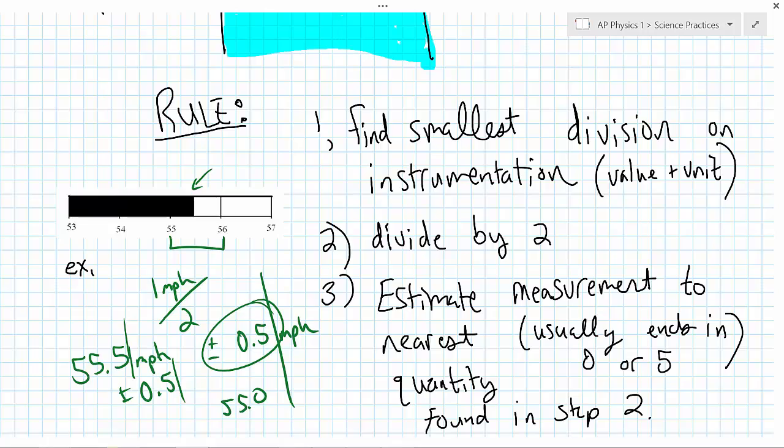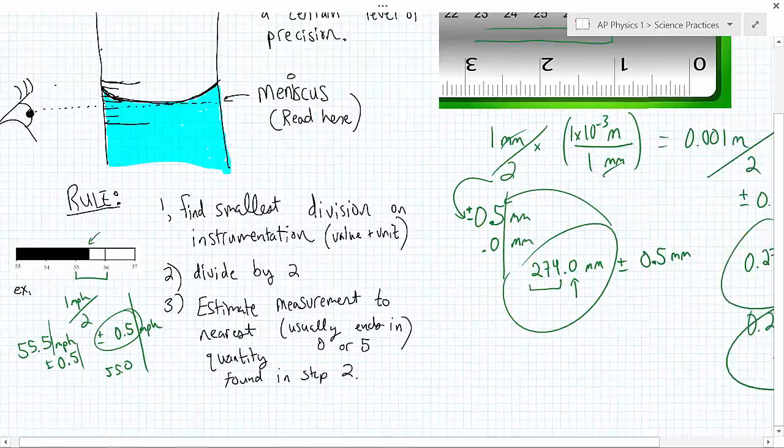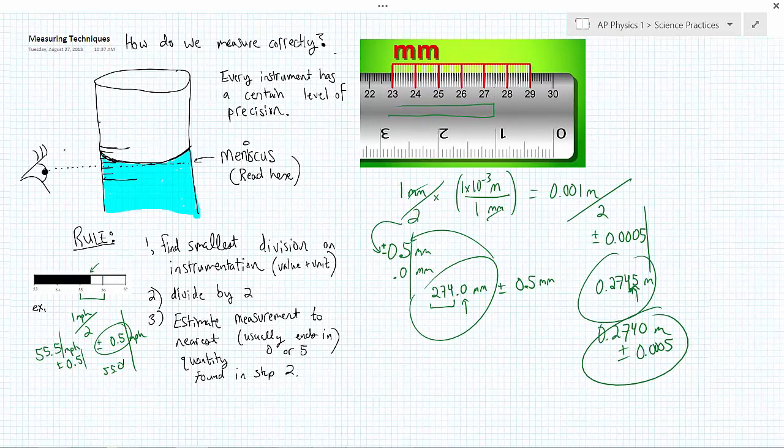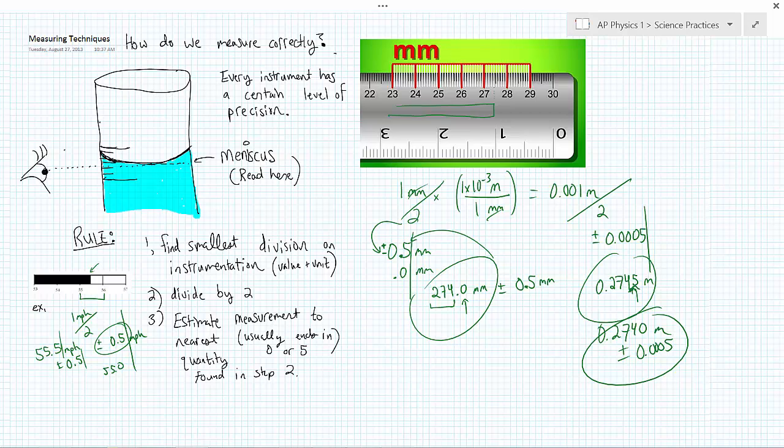This is always going to help us when we're trying to figure out, well, how many sig figs should I have? Do steps 1, 2, 3. Find the smallest division on the instrumentation, divide it by 2, and then we're going to estimate the measurement to the nearest quantity, or the nearest decimal place found in step 2. And it's going to end in 0 or 5. That's all a wrap-up on measurement techniques, and I hope that that was helpful.